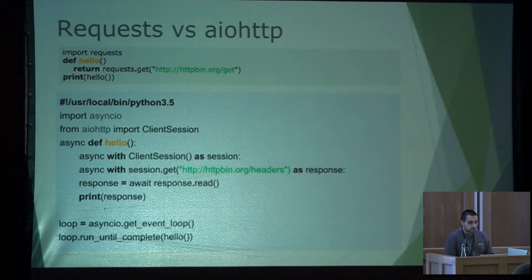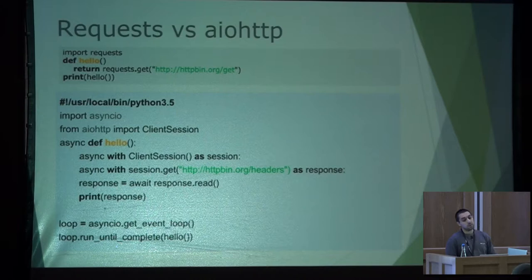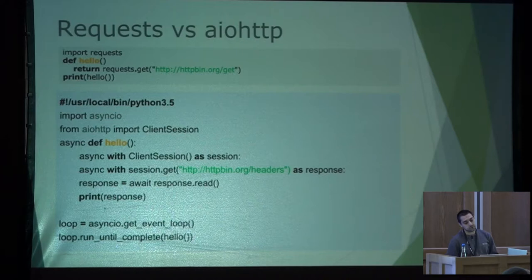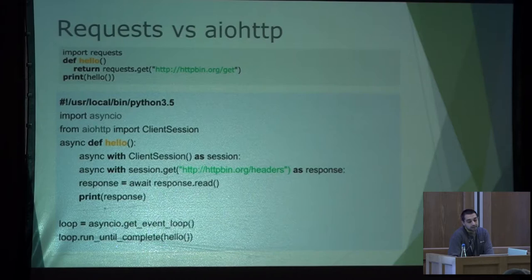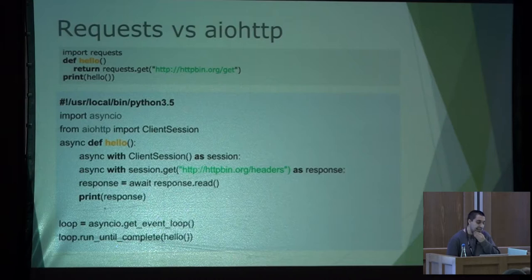This is the first example where we compare requests with AIOHTTP. With requests, making a request is only one line of code. If we want to use AIOHTTP, we need more code. Using Python 3.5, for making asynchronous requests we use the client session of AIOHTTP, open the asynchronous context of the request, and obtain the response.